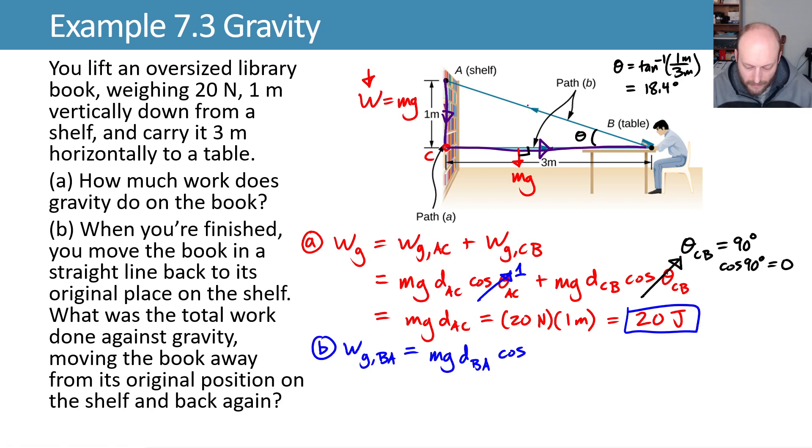If I look at my Mg as I travel back, now the angle between my path and gravity is this angle here which is going to be 90 degrees plus that 18.4. So we can say this is going to be the cosine of 108.4 degrees.